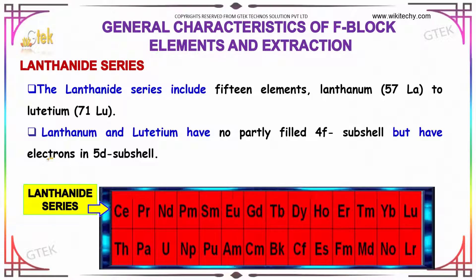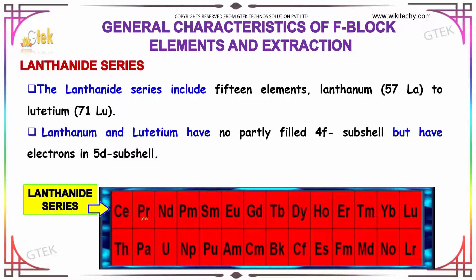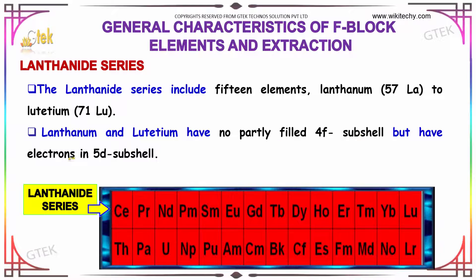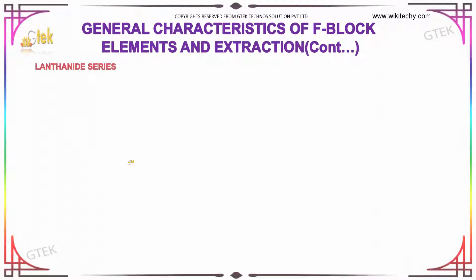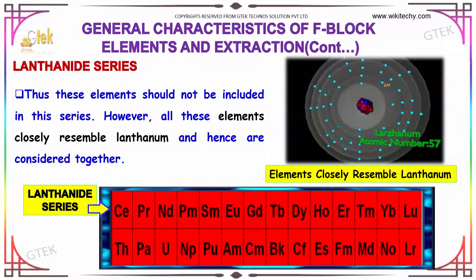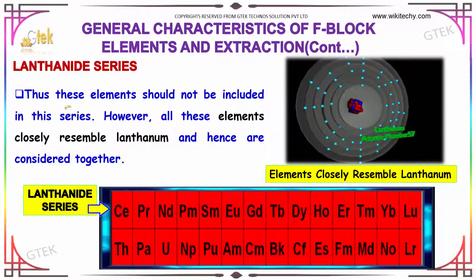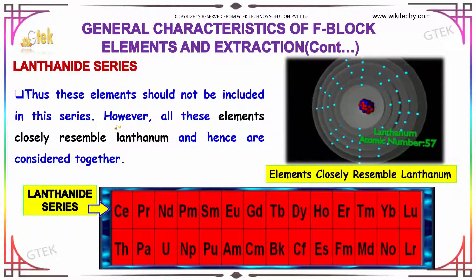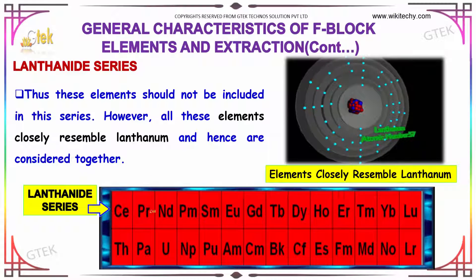Let's talk about the lanthanide series further. The lanthanide series includes 15 elements from atomic number 57 (La, lanthanum) to 71 (Lu, lutetium). Lanthanum and lutetium have no partly filled 4f subshells but have electrons in 5d subshells. Therefore, these elements should not strictly be included in this series. However, all these elements closely resemble lanthanum, hence they are considered together.